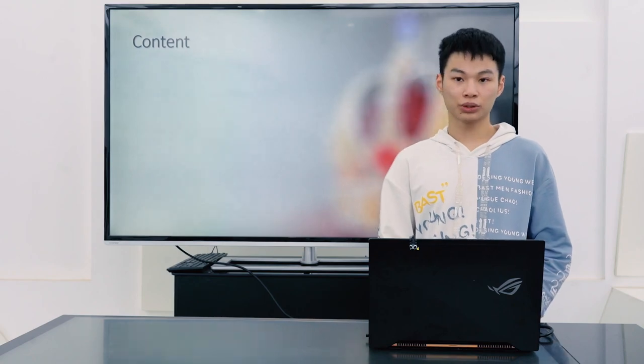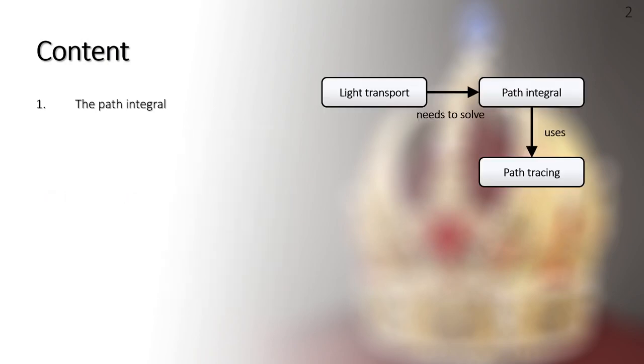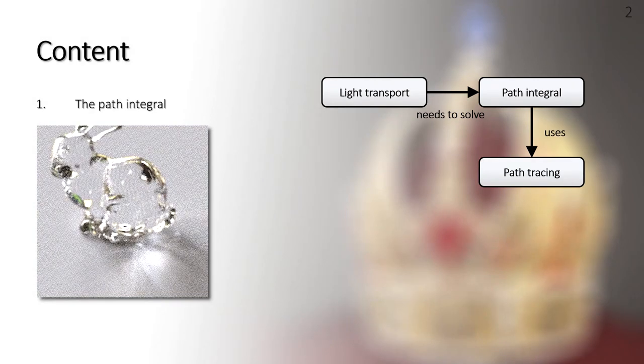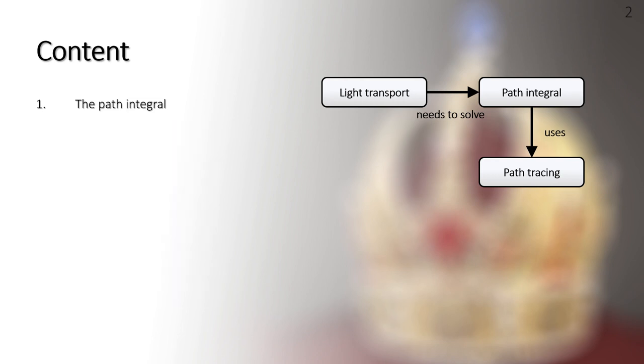This presentation will be delivered with five sections. First, we will briefly introduce the path integral. Path tracing is a popular and powerful method to estimate the path integral. In path tracing, the estimation efficiency depends on the quality of the sampling sequences.